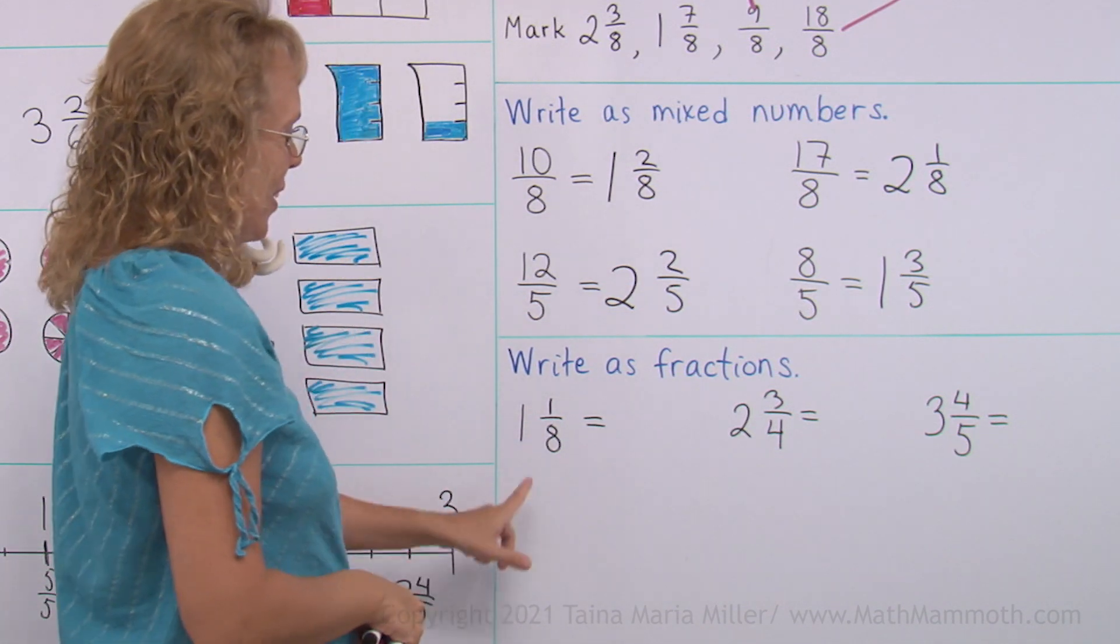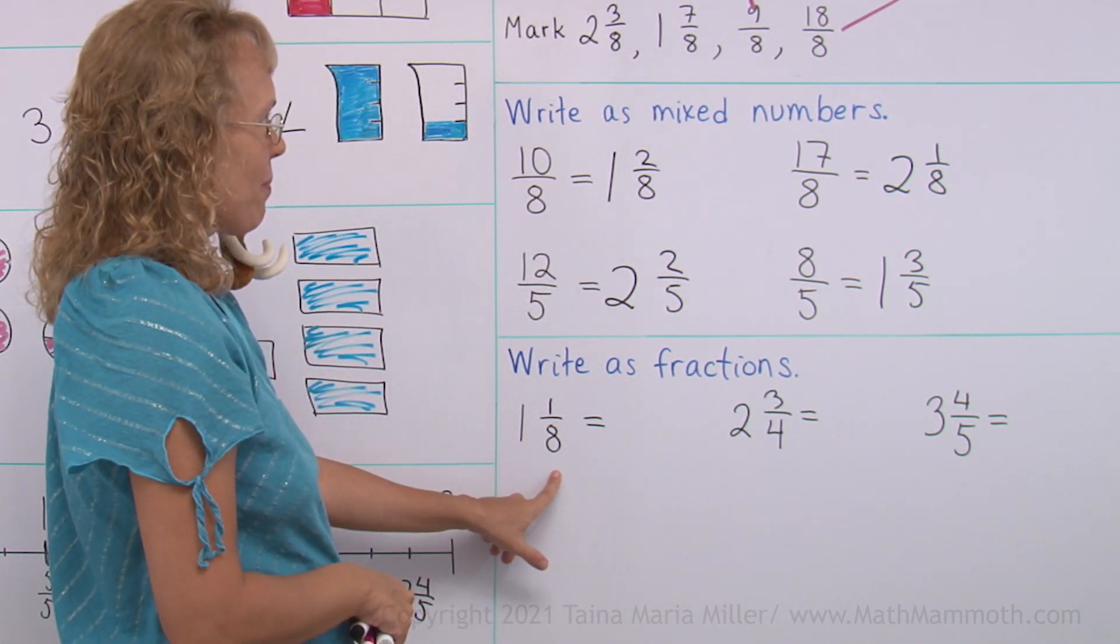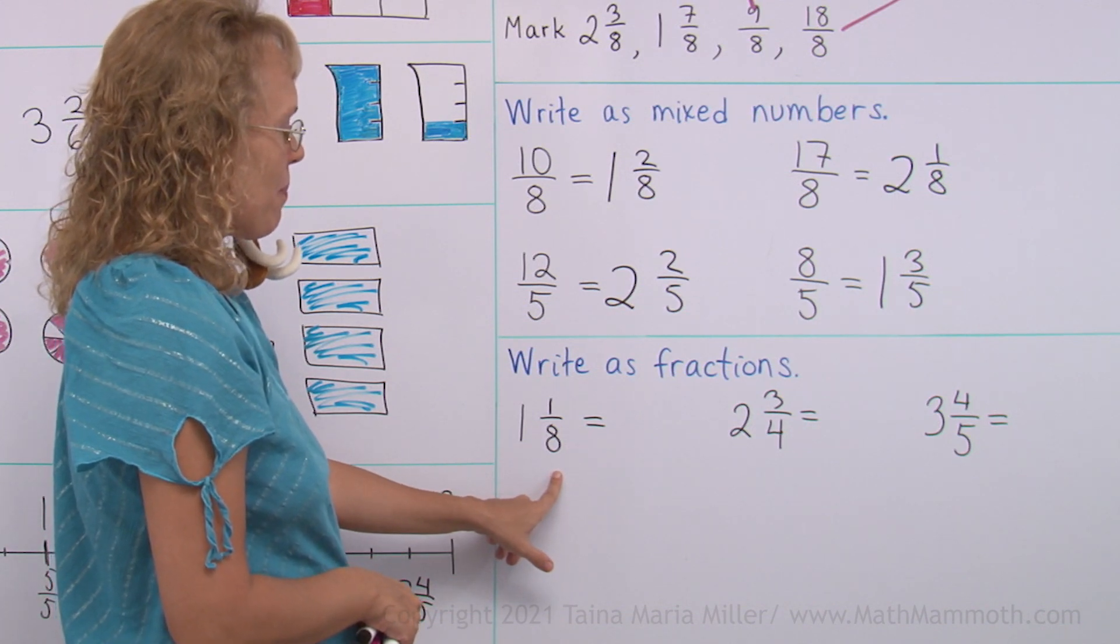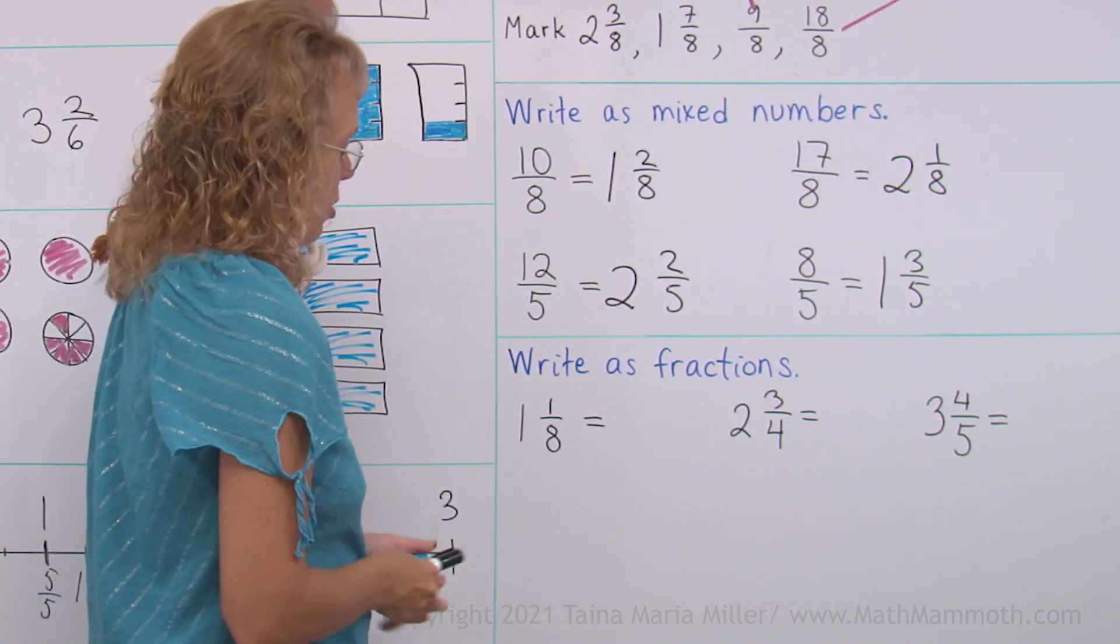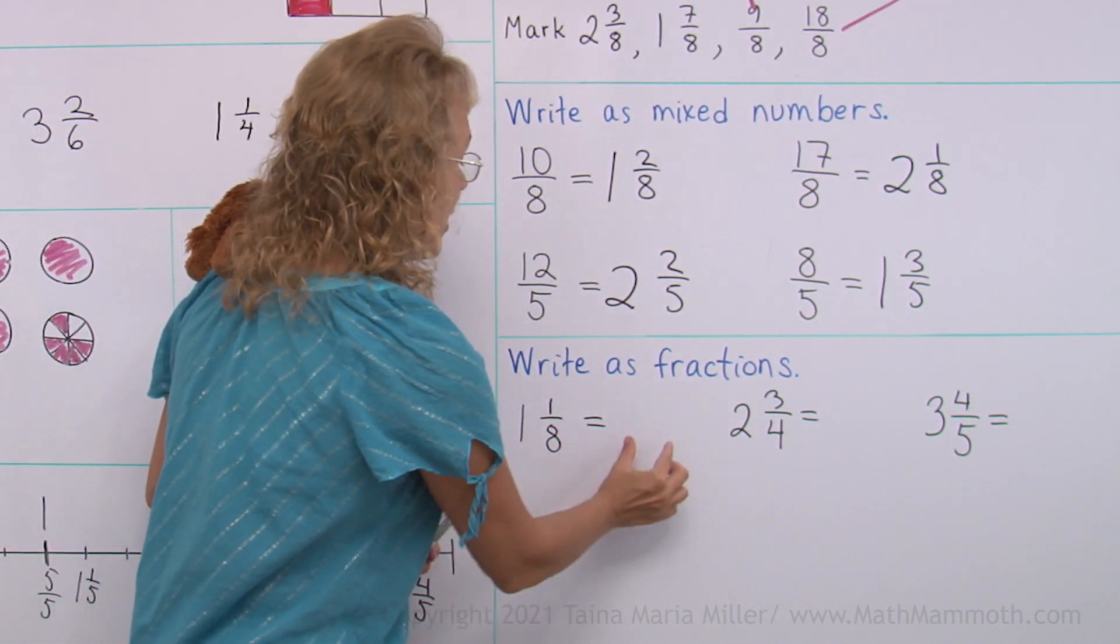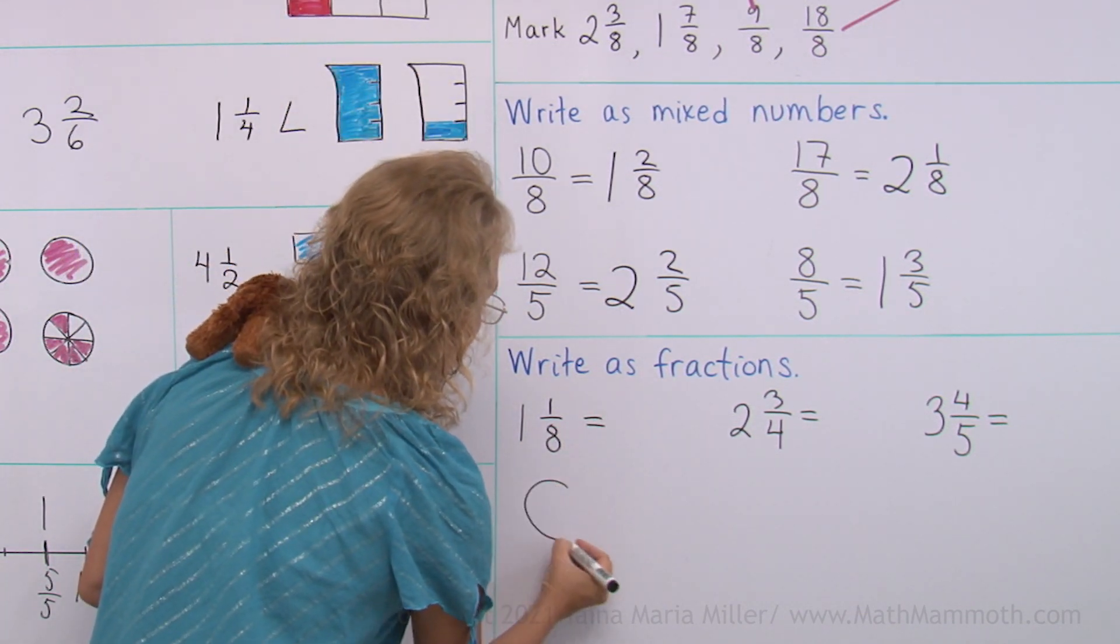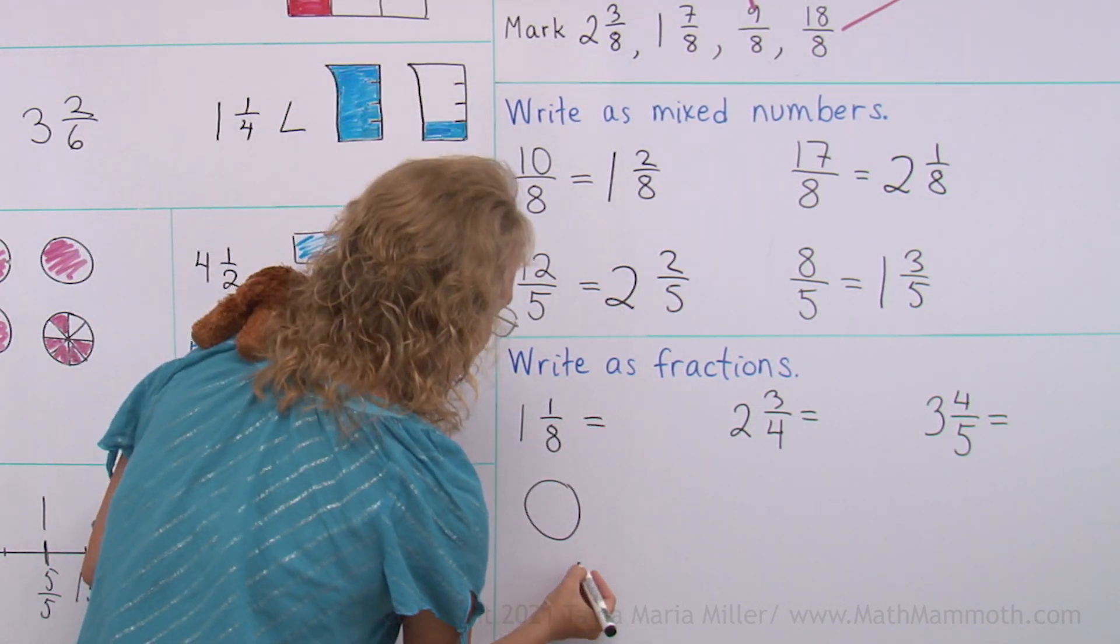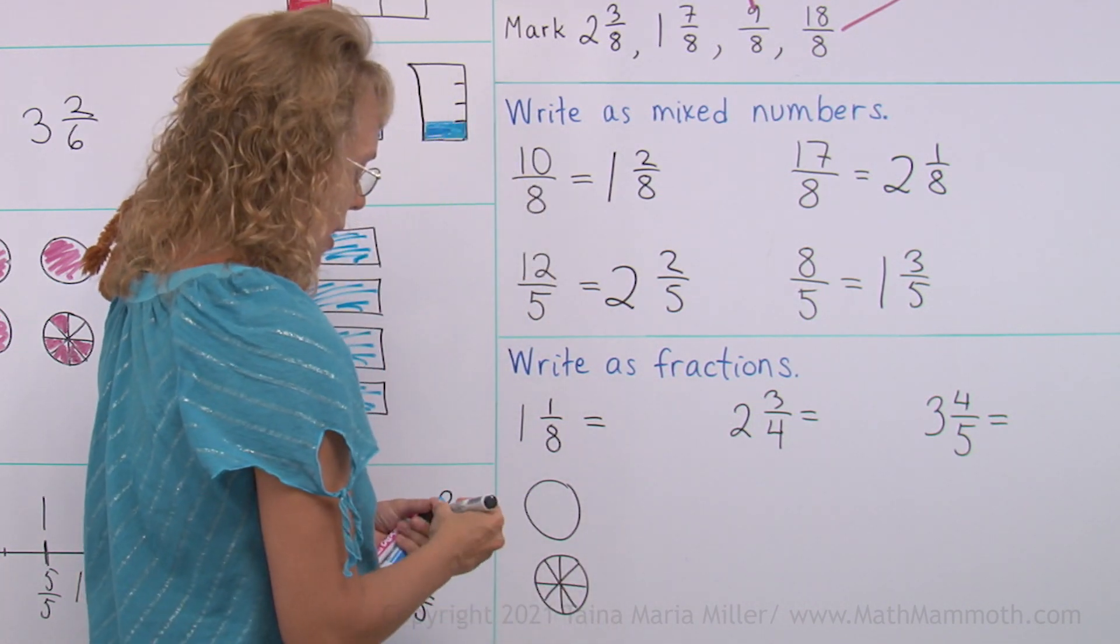Write as fractions. This is a mixed number, 1 and 1 eighth. I could use my number line that had the eighths, but I can also draw. I am going to show you another method for writing this as a fraction. I am going to draw this first: 1 whole pi, and then 1 eighth.